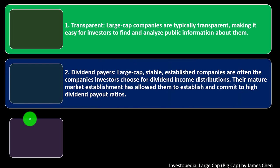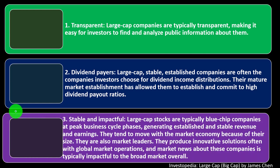Number two — dividend payers. Large cap, stable, established companies are often the ones investors choose for dividend income distributions. In individual investment strategies, when you're close to or in retirement and living on your nest egg, you'll want companies paying dividends rather than up-and-coming growth companies, which are still reinvesting into property, plant, and equipment. Their mature market establishment allows them to commit to high dividend payout ratios.